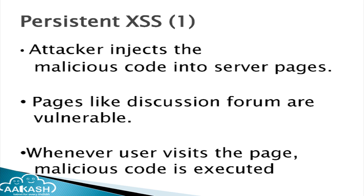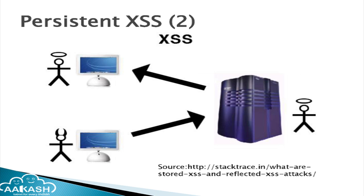In persistent XSS, the malicious code sent by the attacker is stored on the server pages itself. The web page is developed like discussion forums where they are not validating the input the user is giving. The attacker writes a malicious code in the discussion forum pages and sends a request, meaning it is stored in the server itself. Whenever a victim views that page, he downloads the malicious code and executes it. This is persistent XSS — the attacker fills some form in discussion forums, sends a request to the server which does not validate the input, so it is stored there. Whenever a legitimate user views that page, the malicious code is downloaded and executed, and sensitive data may be sent to the attacker.